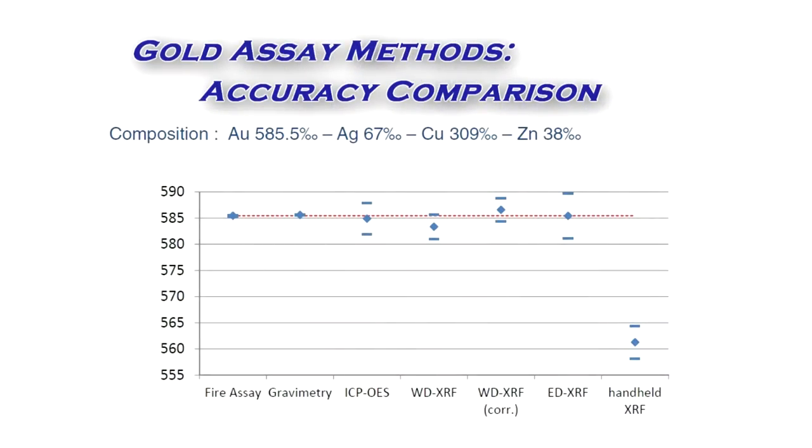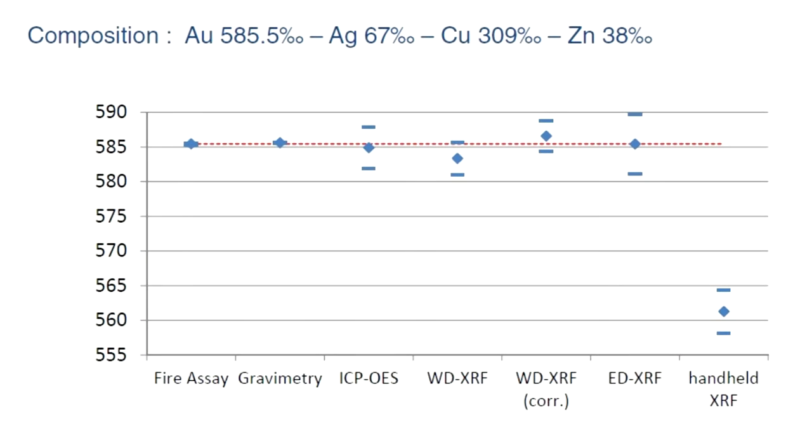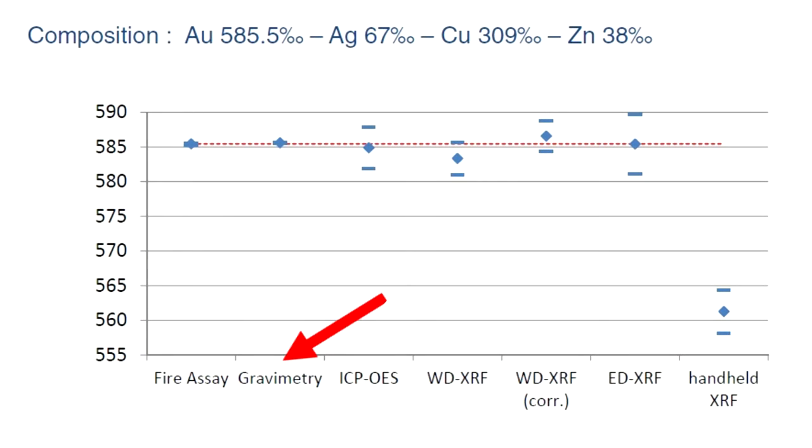Although wet chemistry methods generally require a number of steps, they are more accurate and precise than instrumental analysis for higher concentration materials.